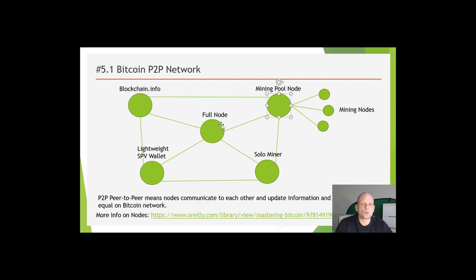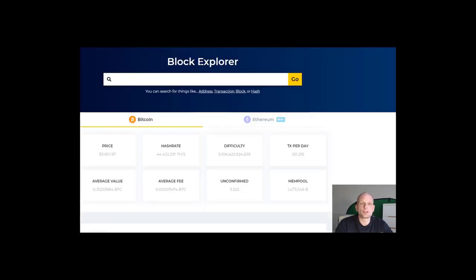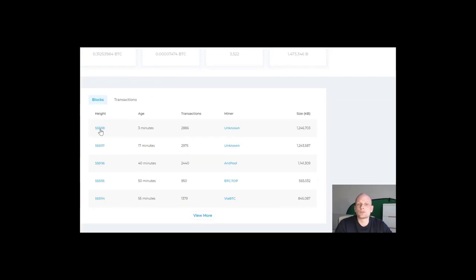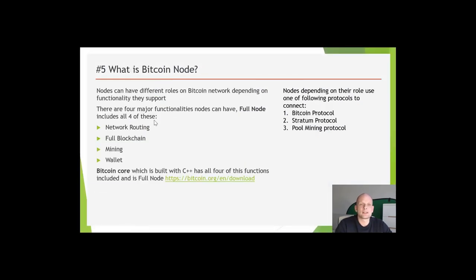All nodes have networking functionality — this is the one functionality included in every node. There are already 20 to 25 million nodes on the Bitcoin network. Nodes can have different roles depending on the functionality they support. Blockchain.info, which I used to demonstrate blocks and when they were mined, is a visual representation of the Bitcoin blockchain and is also a node because it holds all information about the Bitcoin blockchain.